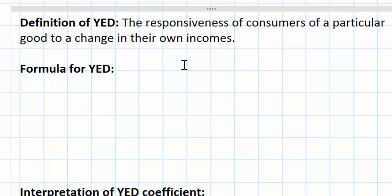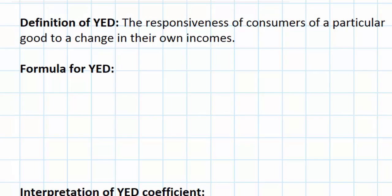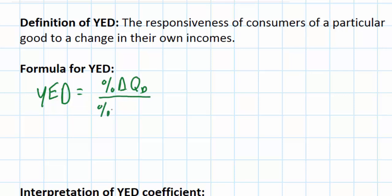As incomes fall, demand for some things rises while demand for other things falls. This has an impact on our understanding of income elasticity of demand, as we're about to see in our example. The formula for YED should look familiar to those of you who have already studied elasticities. YED — income elasticity of demand — equals the percent change in the quantity demanded of a good divided by the percent change in incomes, which we abbreviate as capital Y.